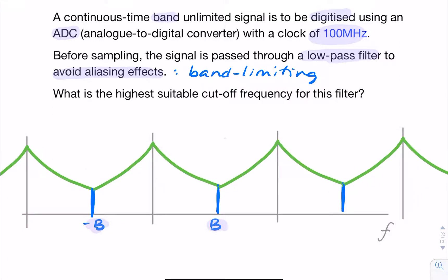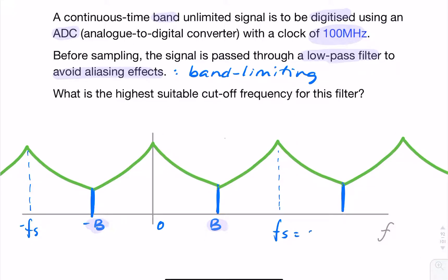The sampling is such that the sample rate FS equals 2B: if the bandwidth is B, then the distance from −FS to FS is twice B. So by choosing our bandwidth carefully, we ensure that after sampling we have critical sampling.